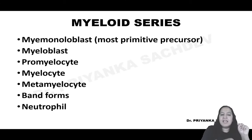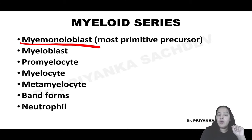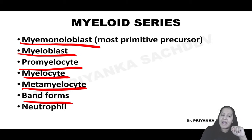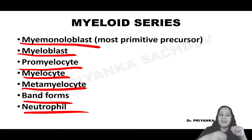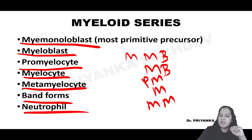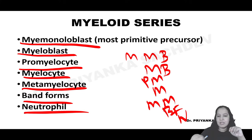The neutrophil precursor sequence: myeloblast → promyelocyte → myelocyte → metamyelocyte → band form → neutrophil. These are the intermediates in between. You have to learn this sequence because when I teach leukemias, in AML the blast comes into the blood, and in CML all precursors come into the blood. So you should know all these precursor names.